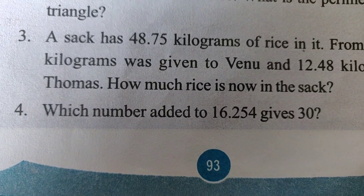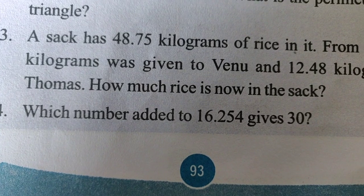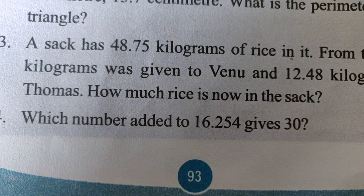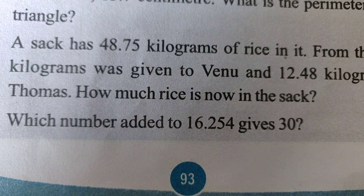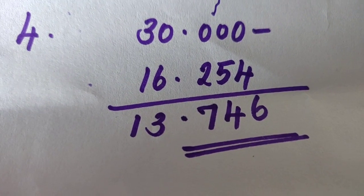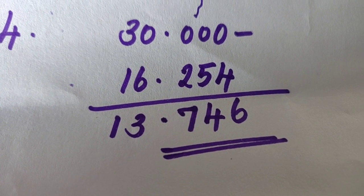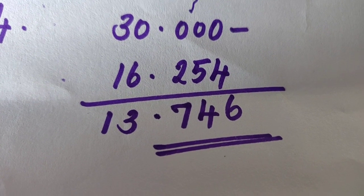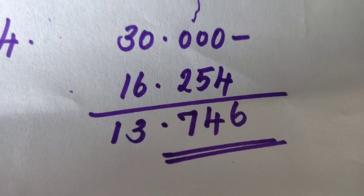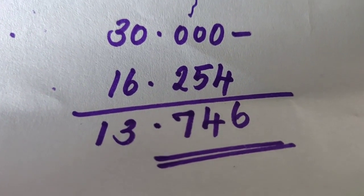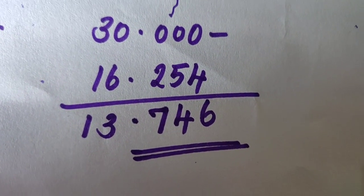Question 4. Which number, when added to 16.254, gives 30? To find the answer, we set up 30.000 minus 16.254, since we need to find what number added to 16.254 gives 30.